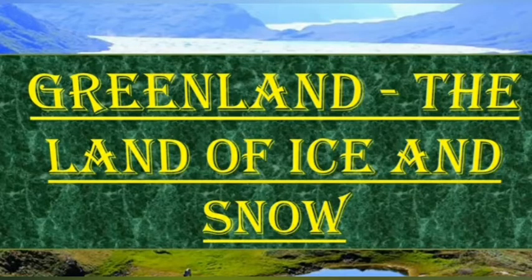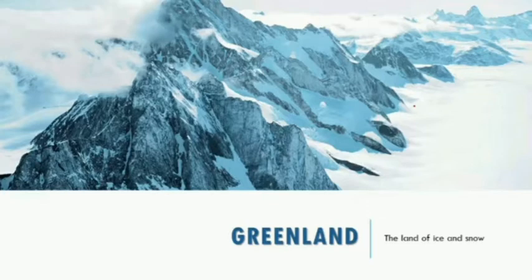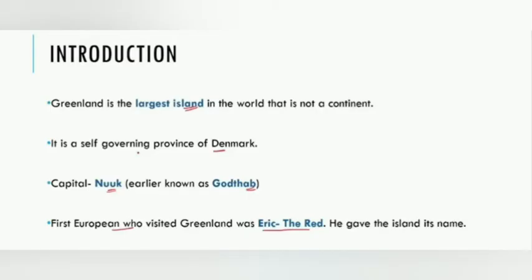Greenland is a country whose northern part is close to the North Pole. Do you think plants or animals can live here, or is it a land of only ice and snow? By the end of this chapter, you will know the location of Greenland, the climate, vegetation, animal life, about Eskimos and their lifestyles, and modern developments that have taken place in Greenland.